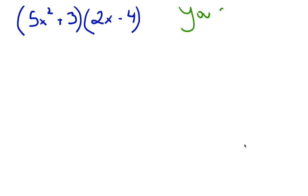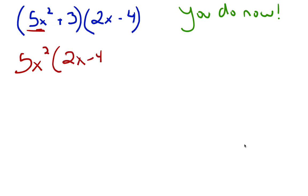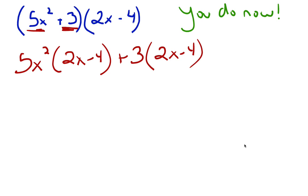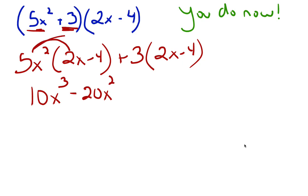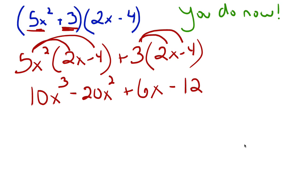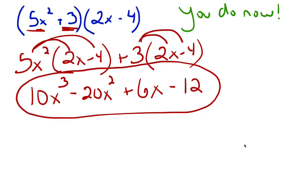Try the next problem. We take the first part: 5x squared times (2x minus 4). Then plus 3 times (2x minus 4). Multiplying gives 10x cubed minus 20x squared, then 3 times 2x is plus 6x, and 3 times negative 4 is minus 12. Seeing no like terms to combine, the final answer is 10x cubed minus 20x squared plus 6x minus 12.